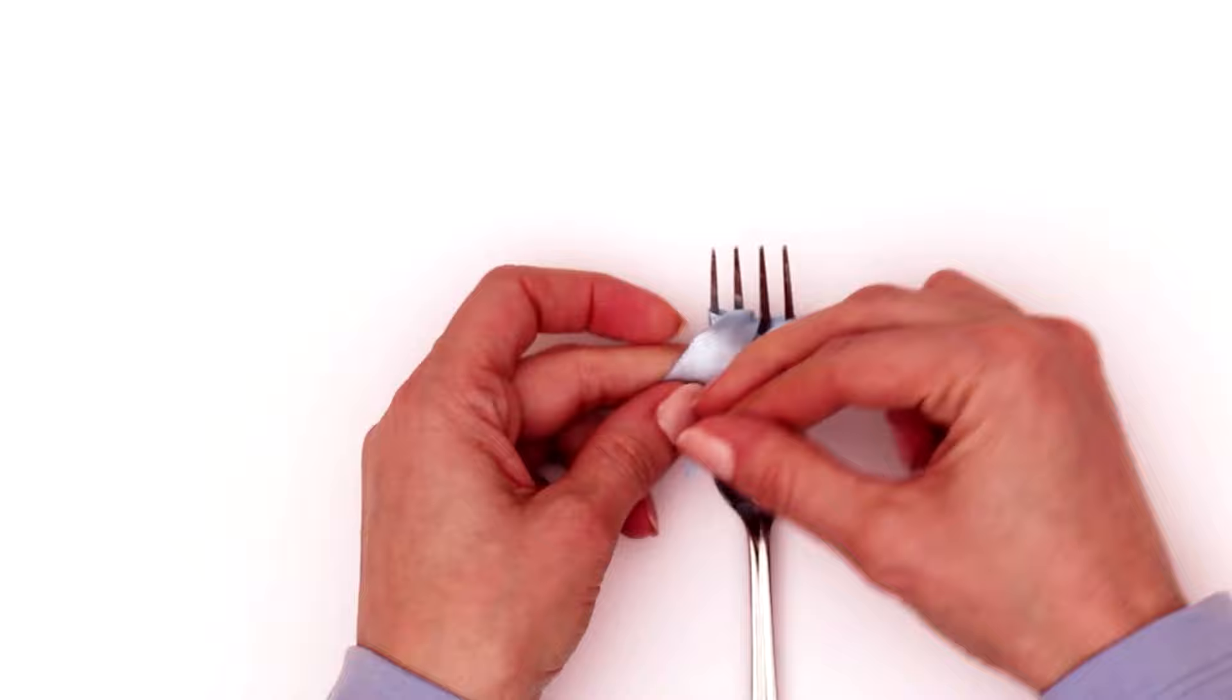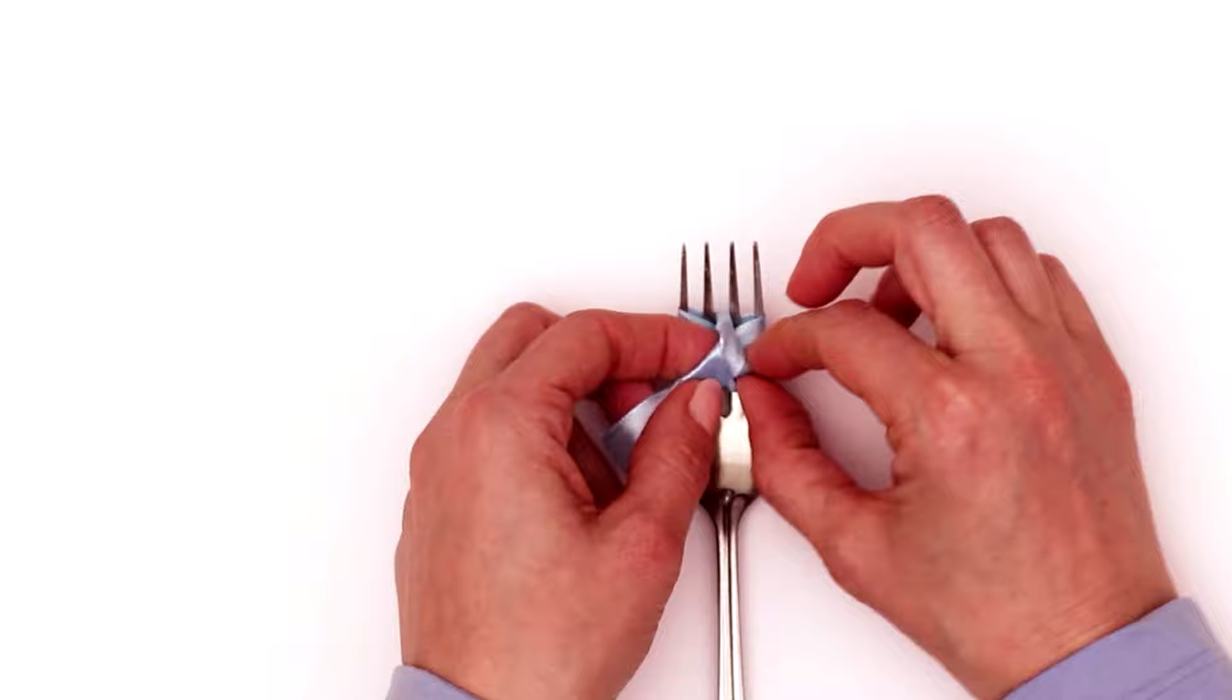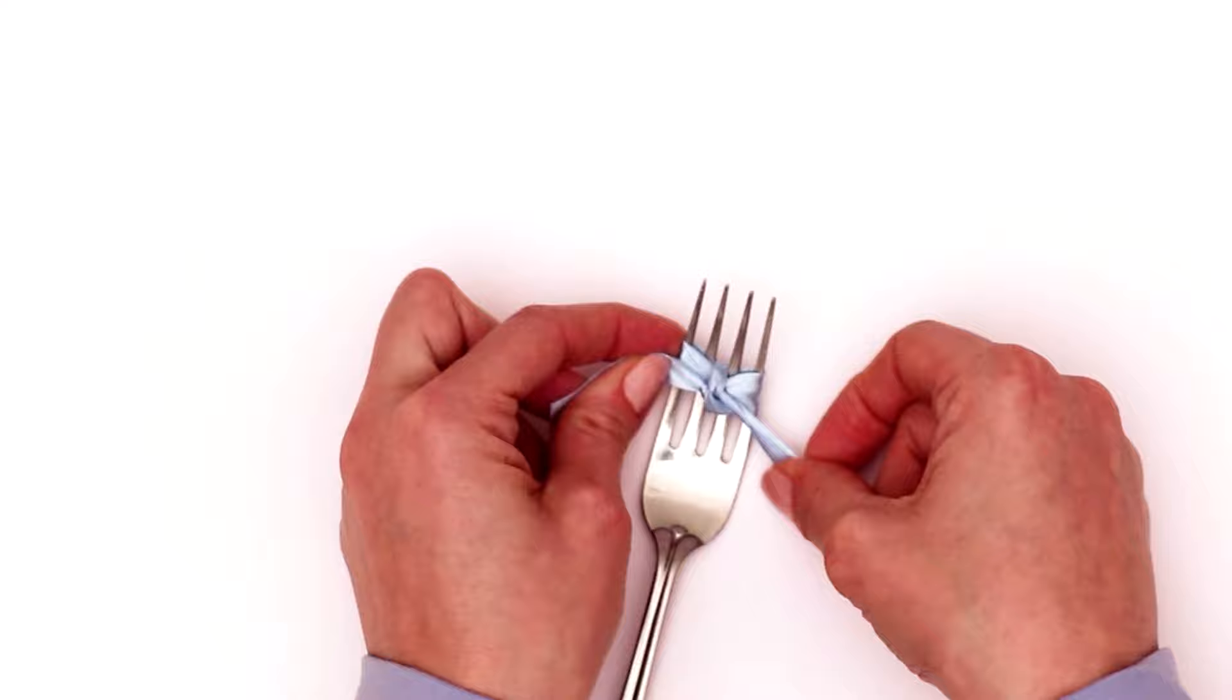Then just take the right side, loop it through the left, creating a tied knot, and then pull it taut. Ready? Just go ahead and pull tight.